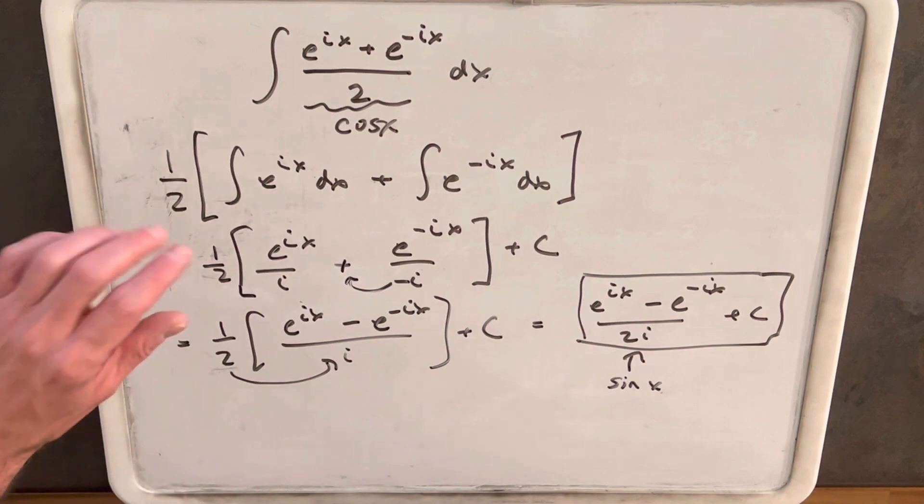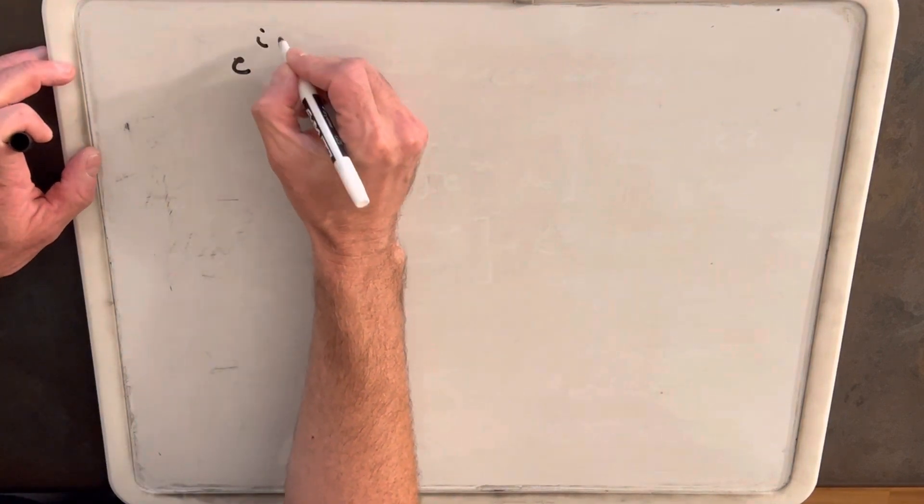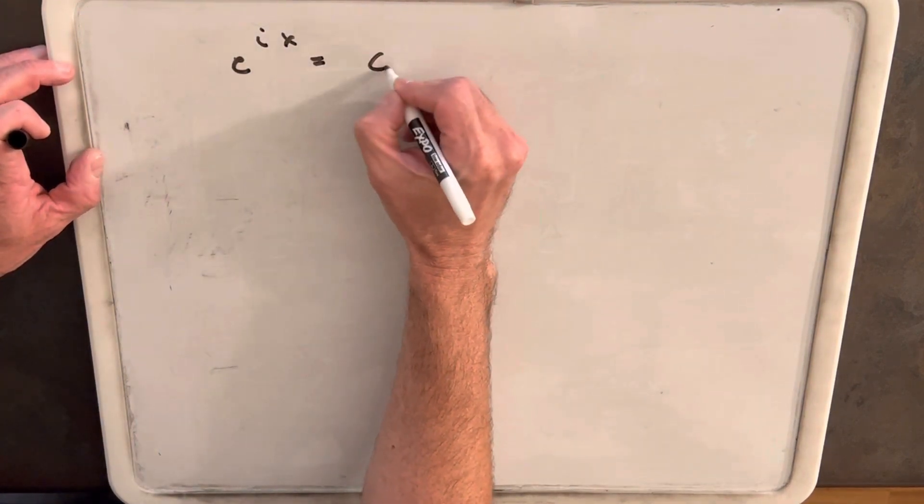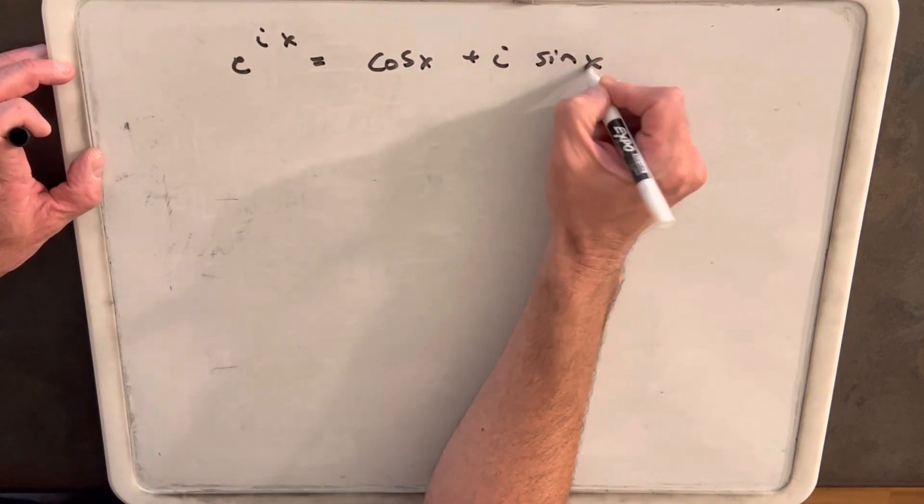So briefly, I'll show how we get from Euler's formula to this definition of sine and cosine, but I'm just going to clean up the board. So Euler's formula tells us that e to the ix equals cosine x plus i sine of x.